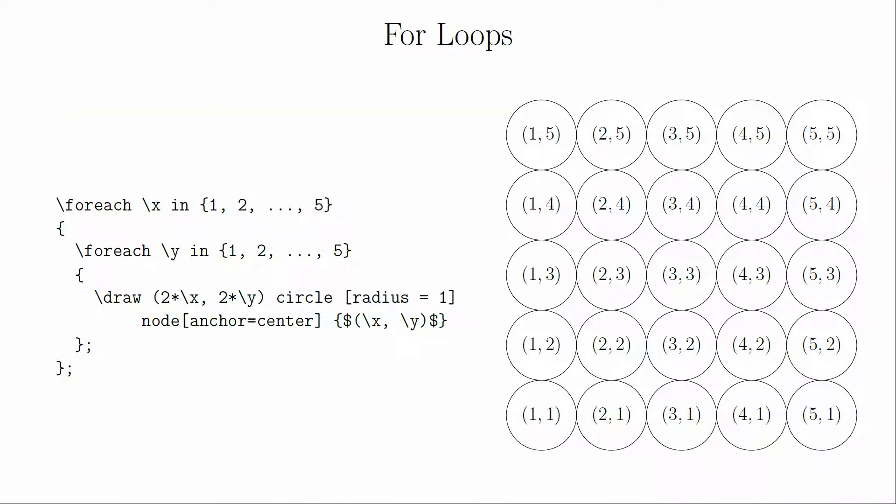For loops. If you have a repeating pattern, you can create a for loop so that you don't need to retype the code over and over again. The variables can be used both in the coordinates and as text objects.